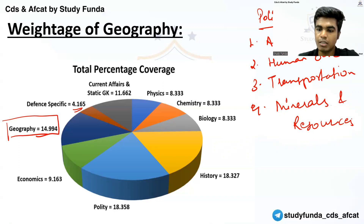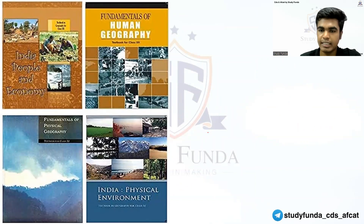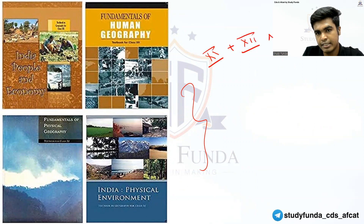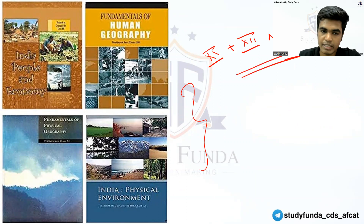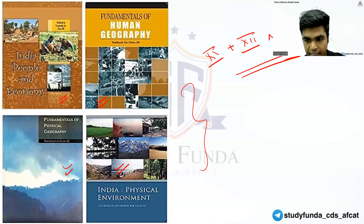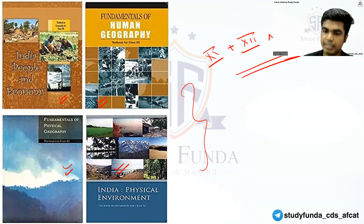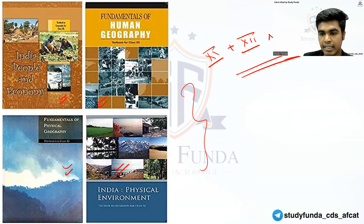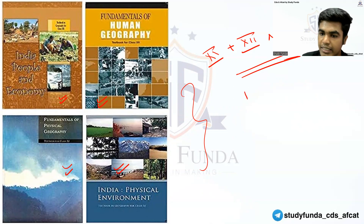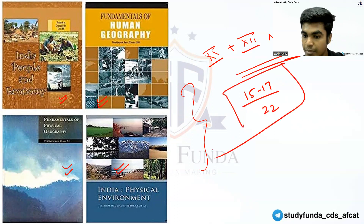Now you might wonder how to study. Usually, four books are recommended: 11th and 12th NCERT — two books for 11th and two for 12th. Read these four books thoroughly first. After reading, take tests and practice questions, then analyze your results. Target 15 to 17 correct questions out of 22.